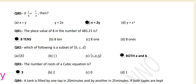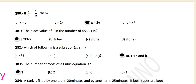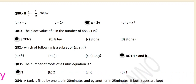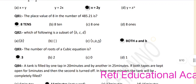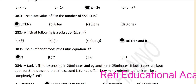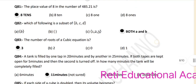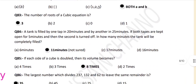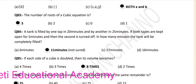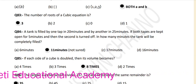Question number 81: The place value of 8 in the number 4852 0.21 is 8 tens. Question number 82: Which of the following is a subset of B, C, D? The correct answer is both A and B. Question number 83: The number of roots of a cubic equation is 3.